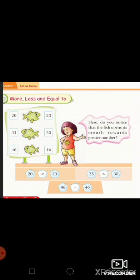Students, there are pictures of three fish given on your screen. Look at the first fish. There are two numbers given, 20 and 23. The fish opens its mouth towards 23 because 23 is more than 20. In other words, we can say 20 is less than 23.